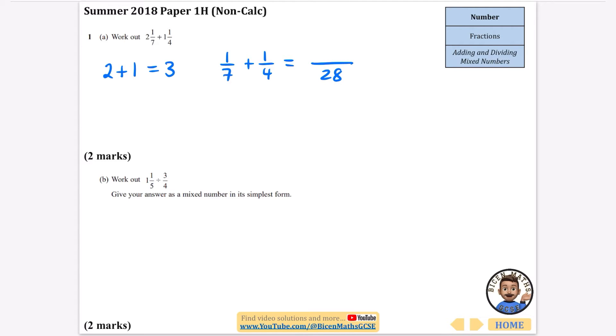To make the 7 become 28, I times it by 4, so I also need to times the 1 by 4. And to make the 4 become 28, I times it by 7. So 4 plus 7 over 28, that's 11 over 28. Don't forget that we've also got the 3 as well. So putting that back together, we have 3 and 11/28. We can leave it like that because it hasn't said for a particular way to write the answer.